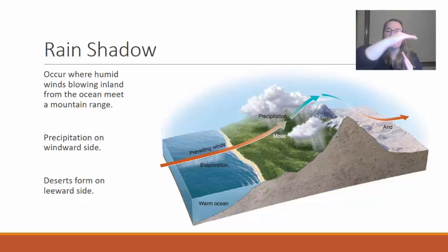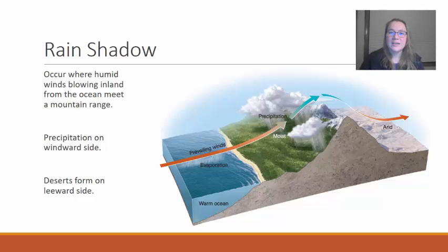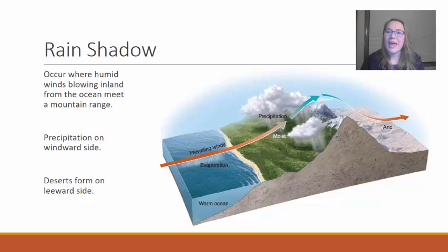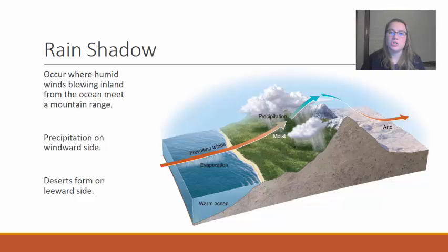As the air comes over the top and starts to drop on the far side of the mountain it goes through the process of adiabatic heating. We use these same terms when we describe Hadley cells — in a Hadley cell as the air rises at the equator it goes through adiabatic cooling and releases the moisture near the equator. The exact same thing is happening here at a rain shadow.